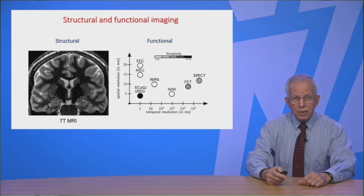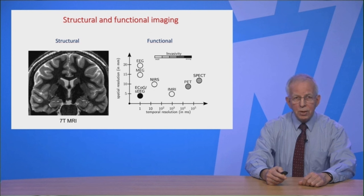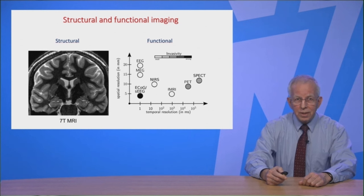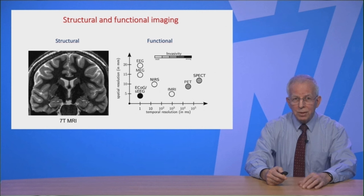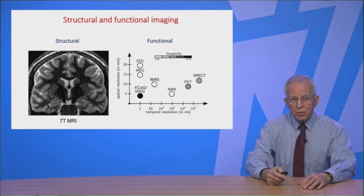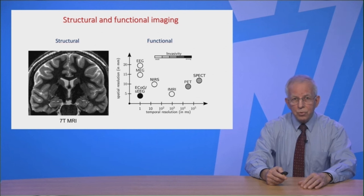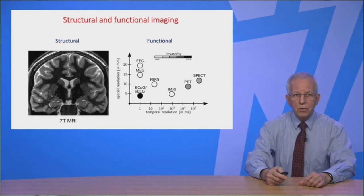We have different structural and functional imaging techniques. For structure, we use MRI in the first place, but CT can be indicated as well. We have several functional imaging techniques with different spatial and temporal resolution and different invasivity. EEG has a very good temporal resolution but rather poor spatial resolution. PET and SPECT have a rather poor temporal resolution and better spatial resolution, and are to some degree invasive because you have to inject a tracer.